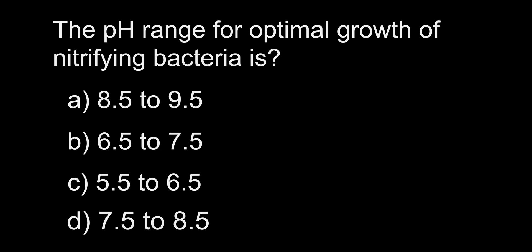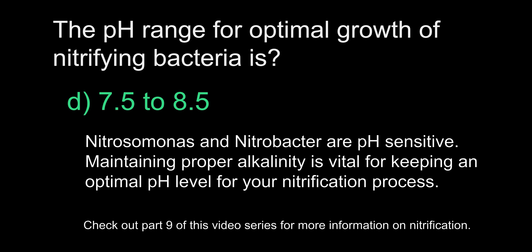The pH range for optimal growth of nitrifying bacteria is: A. 8.5 to 9.5. B. 6.5 to 7.5. C. 5.5 to 6.5. D. 7.5 to 8.5. The answer is D, 7.5 to 8.5. Nitrosomonas and Nitrobacter are the two types of bacteria vital to the nitrification process — remember those names. These bacteria are pH sensitive, so maintaining a pH of 7.5 to 8.5 is important for proper ammonia removal. Check out part 9 in this series, which goes over the nitrification process further.